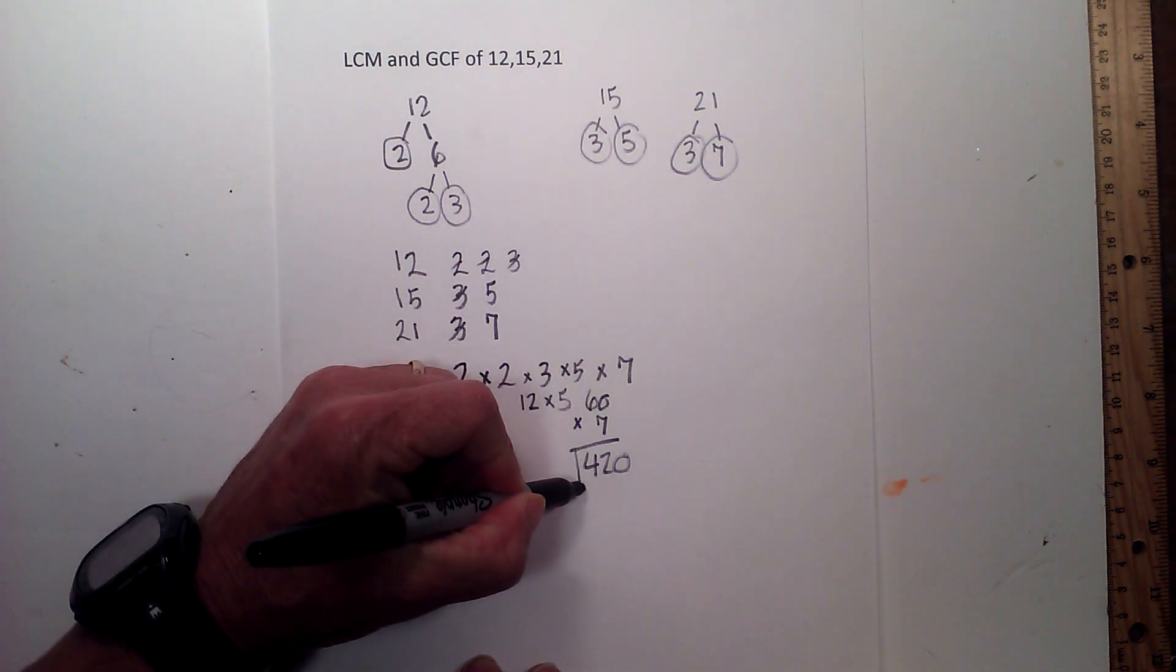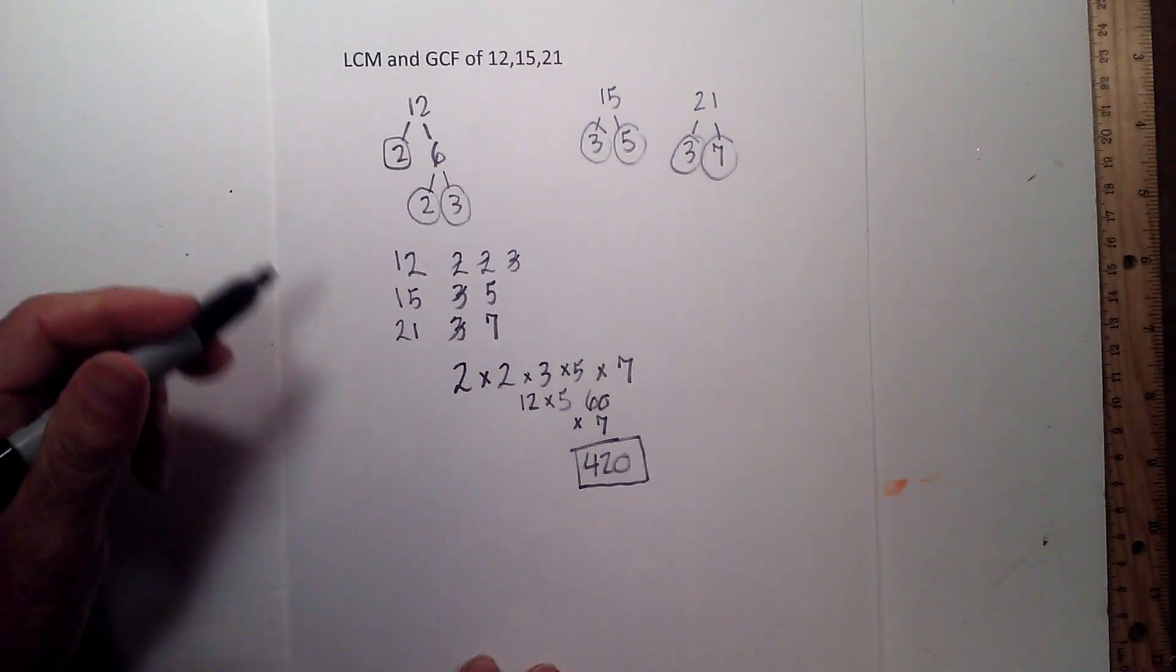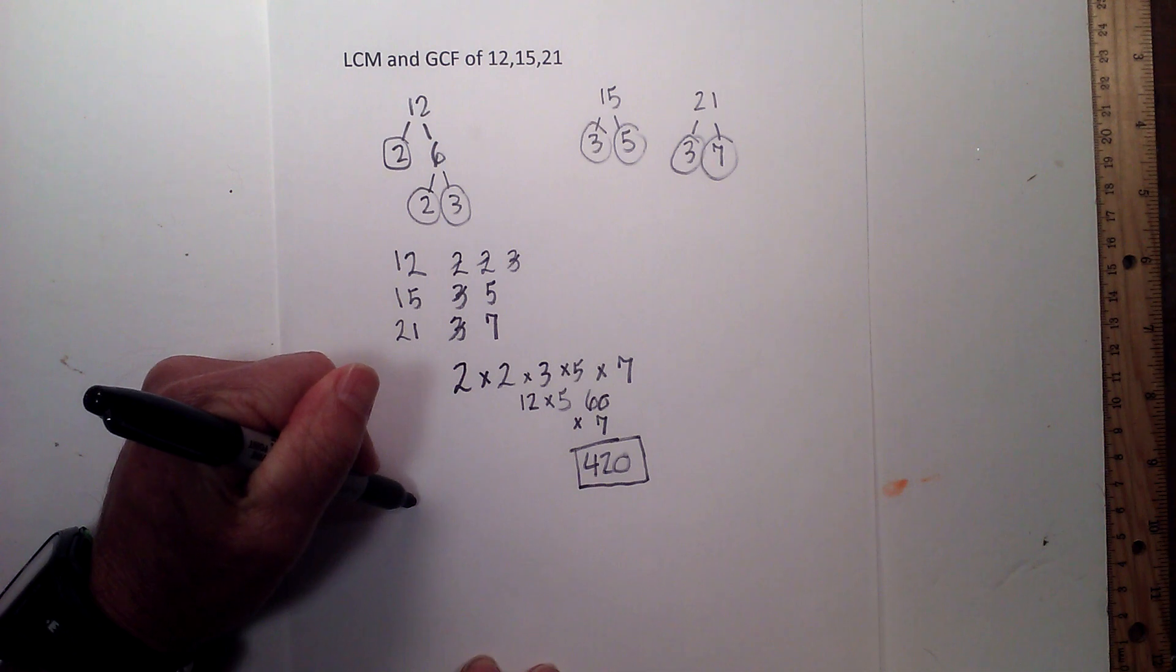So the LCM of 12, 15, 21 is 420. Now in order to find the greatest common factor, I take the same factors.